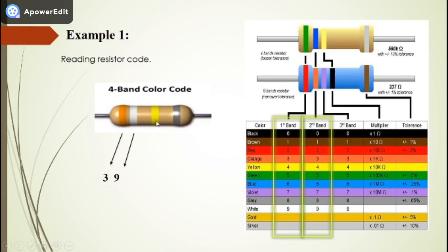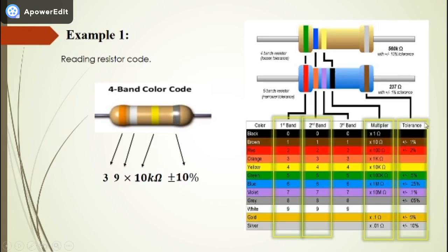The third color in the four-band resistor is the multiplier. It is yellow, and yellow in the multiplier column is 10 kilo-ohm. We multiply 39 by 10k to get 390 kilo-ohm. The last color is the tolerance band — it is silver, and silver in the tolerance column is ±10%. As a result, the resistance of this resistor is 390 kΩ ±10%.